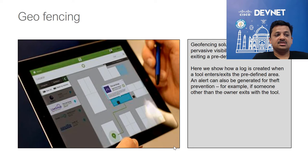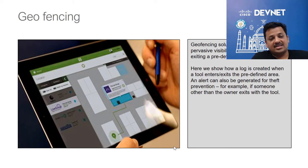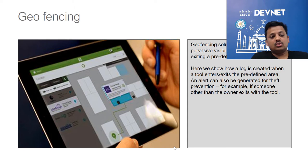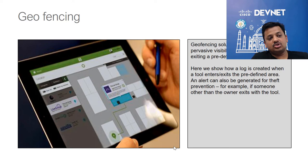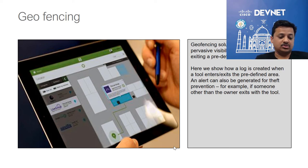The second use case is about geofencing. A lot of offices have high value assets and they don't want those assets to be misplaced or moved around. What you can do is enable a geofence in a particular area and say that if this object is not in its original location, then send out an alarm. That's the use case of geofencing.